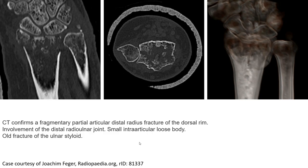This is another example of a Barton fracture on CT, where CT confirms a fragmentary partial articular distal radius fracture with dorsal rim involvement, involvement of the distal radioulnar joint, a small intra-articular loose body, and an associated ulnar styloid fracture.